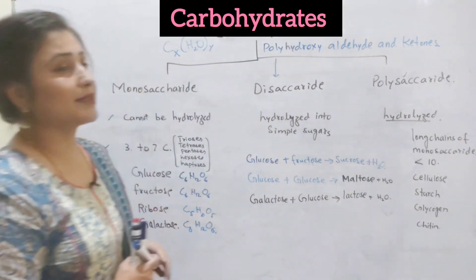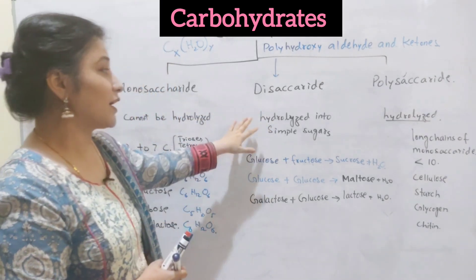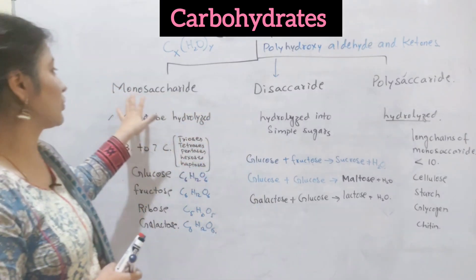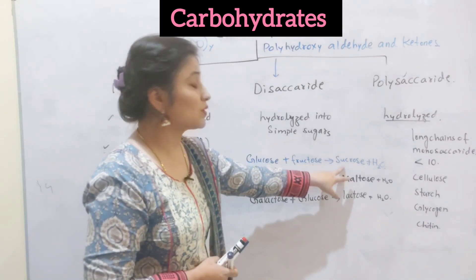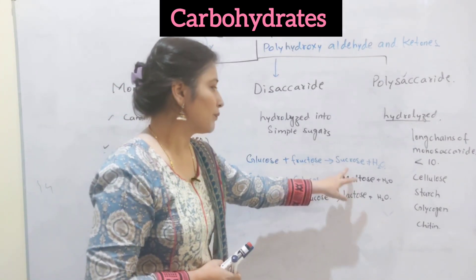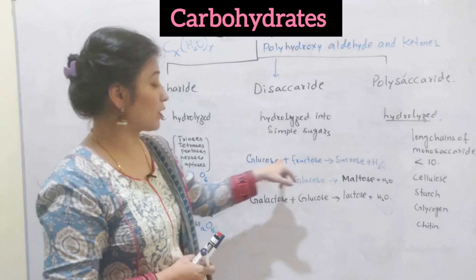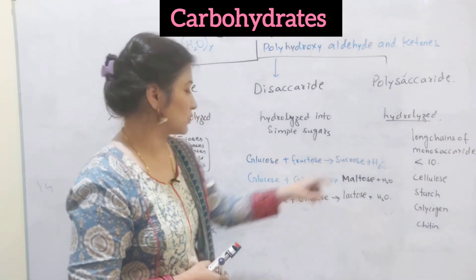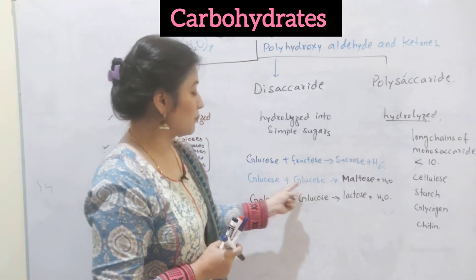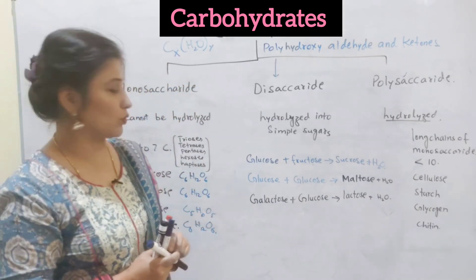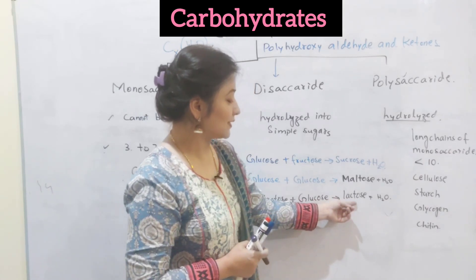Disaccharides are made up of two monosaccharides. They can be hydrolyzed into simple sugars, yielding two monosaccharides on breakdown. Examples of disaccharides are sucrose, maltose, and lactose. Sucrose is made up of glucose and fructose joined together by condensation, in which a water molecule is removed. When two glucose units join, they create the disaccharide maltose.